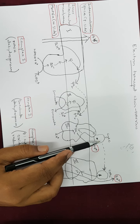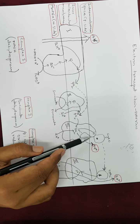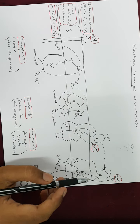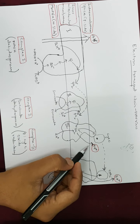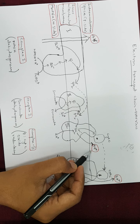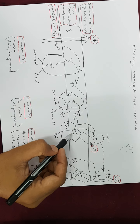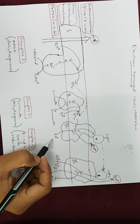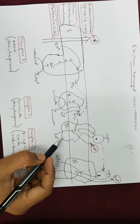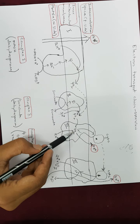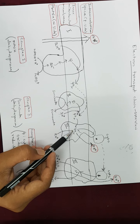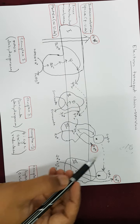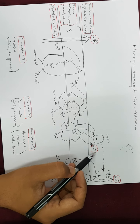Cytochrome C moves towards complex three two times and transfers the electrons to complex four. In this process, four protons are pumped into the intermembrane space — two from the reduced ubiquinone molecule and two from the matrix of the mitochondria. So for each molecule of reduced ubiquinone oxidized at complex three, four protons are transferred into the intermembrane space.